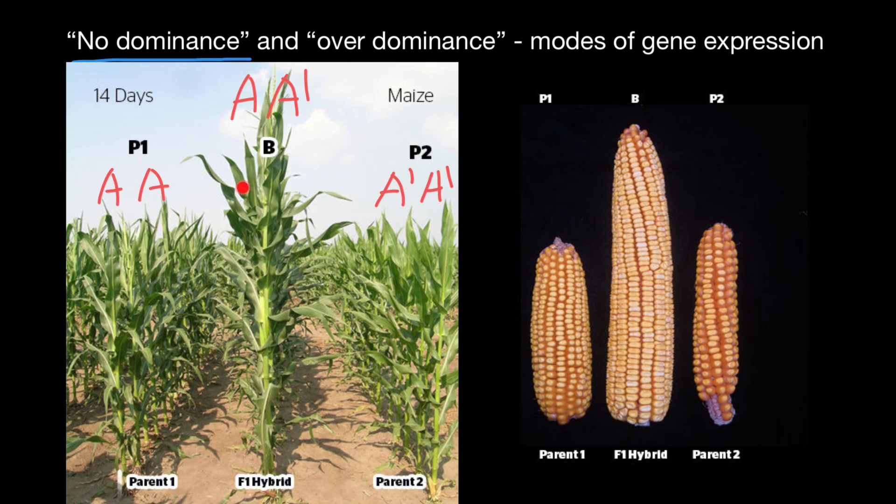And we see here an example of the heterozygous. And not only the plant itself and foliage is going to be bigger, but the ear of corn is also going to be bigger in a hybrid. Again, this is an example of over dominance when the hybrid shows better results than inbred parents.